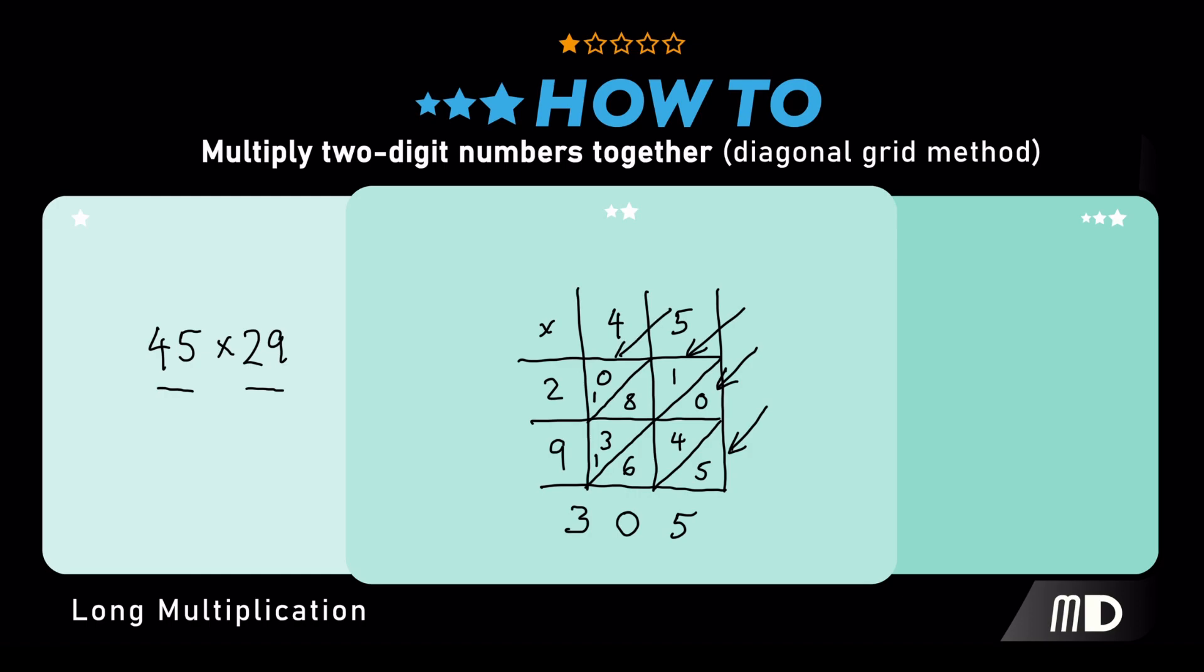where there was only a 0. So, the last diagonal is 0 plus 1, which is 1. And we've got 1,305. So, 45 multiplied by 29 gives us 1,305.